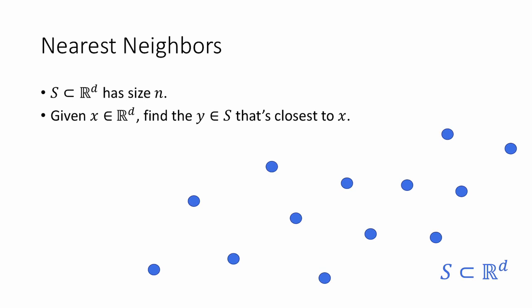The nearest neighbors problem is defined as follows. Suppose we're given as input some set S, which is a set of size N that lives in R to the D. Given some point X in R to the D as input, our goal is to find the Y in S that's closest to X in Euclidean distance. So in this picture, that would be this Y.